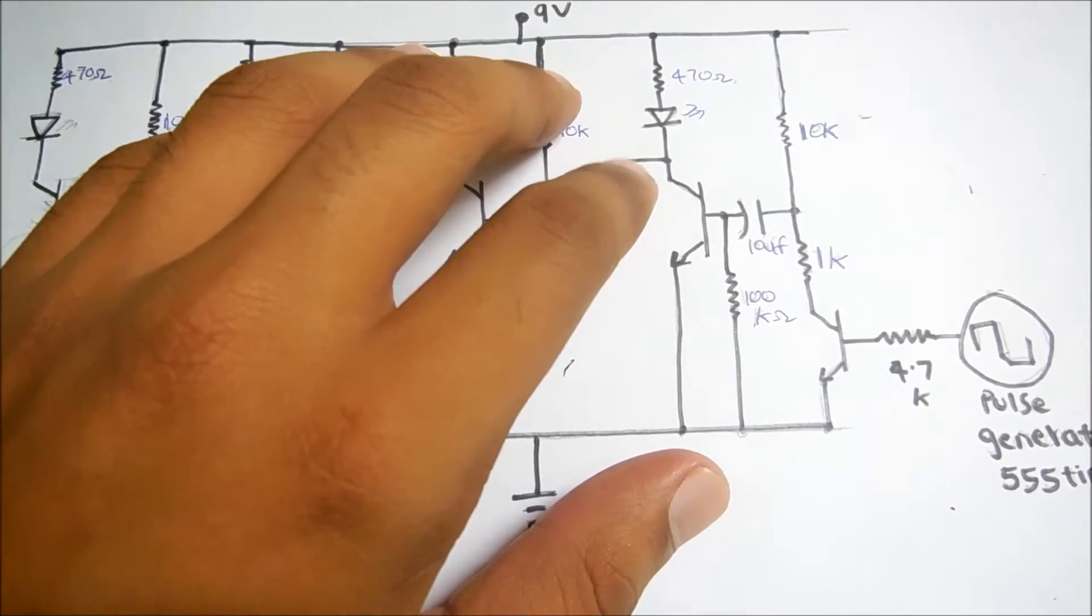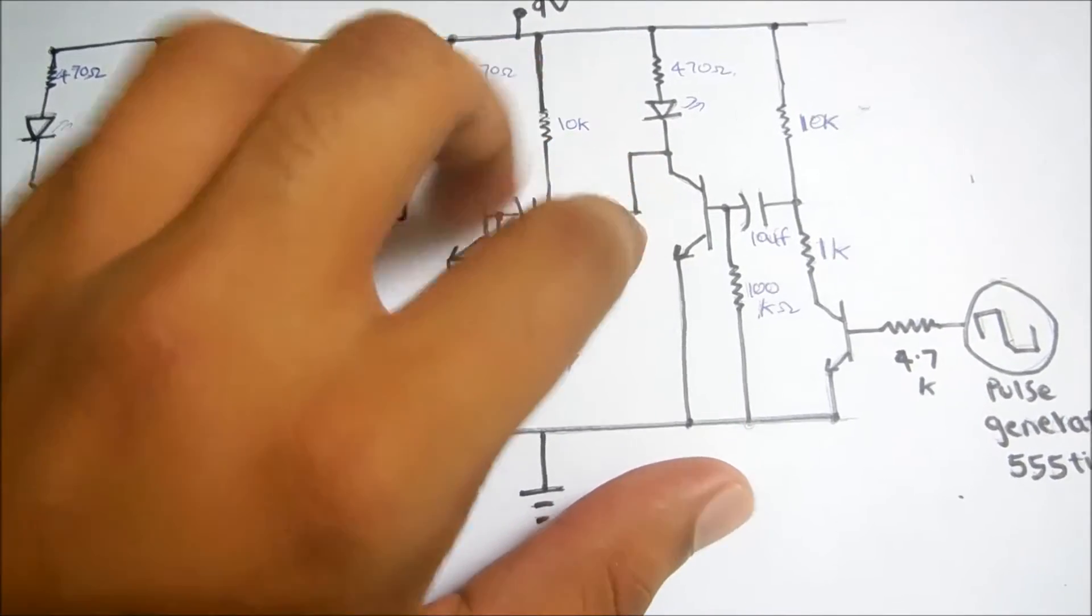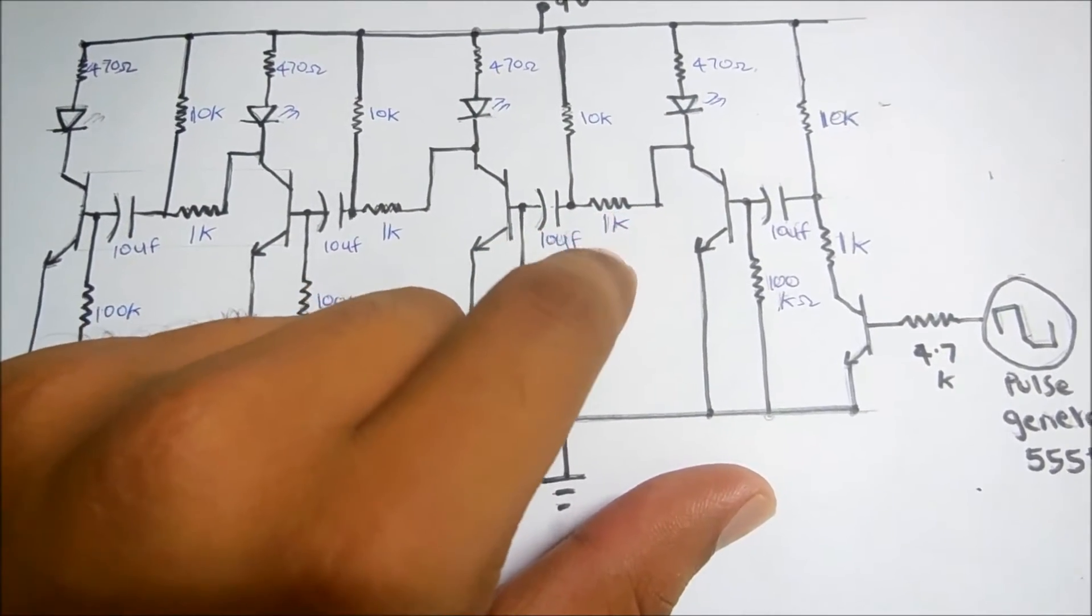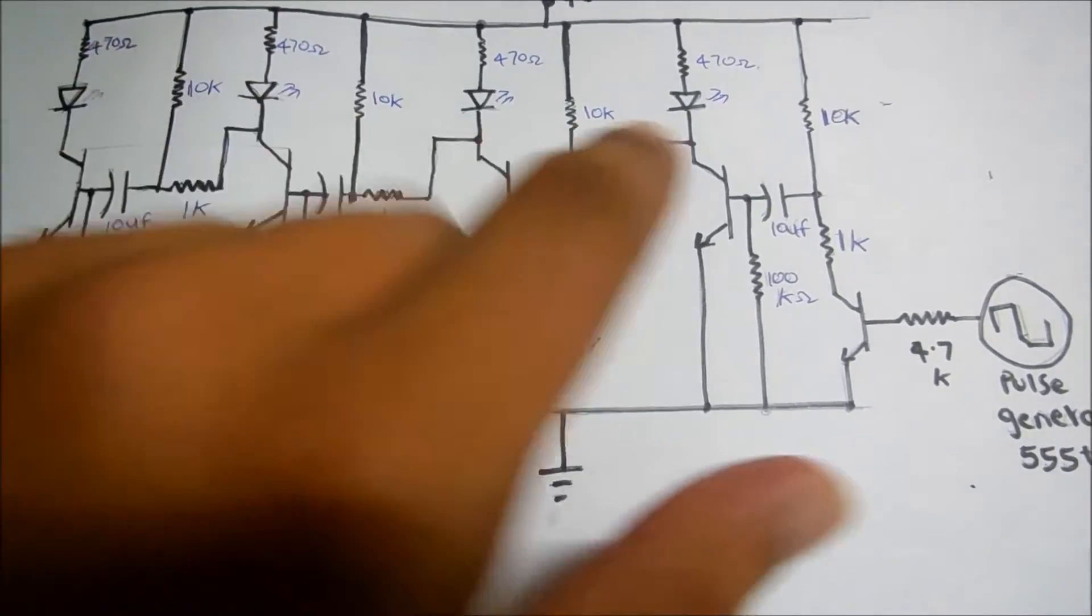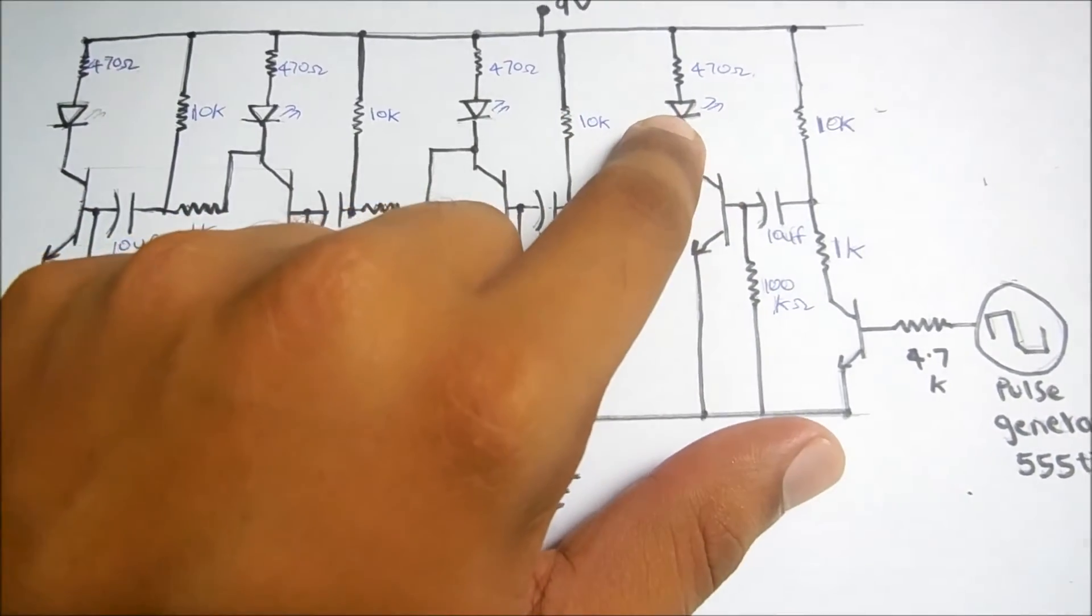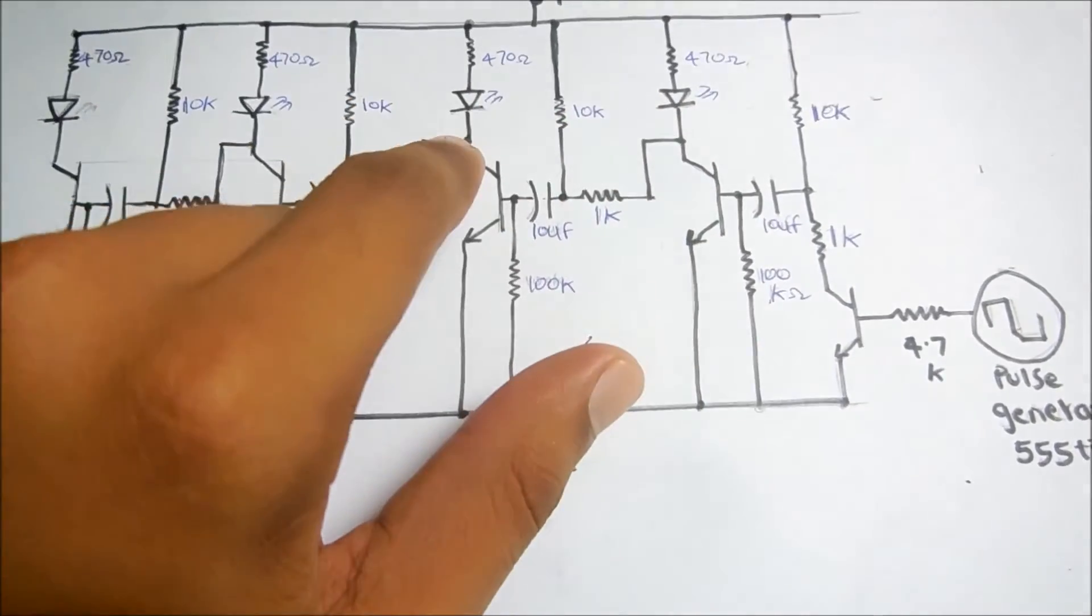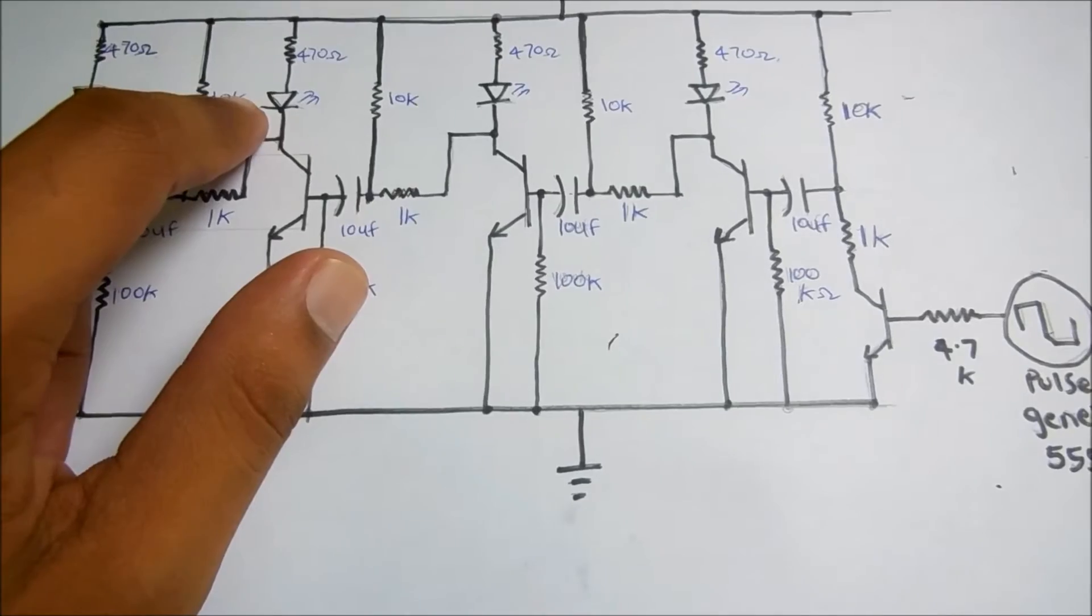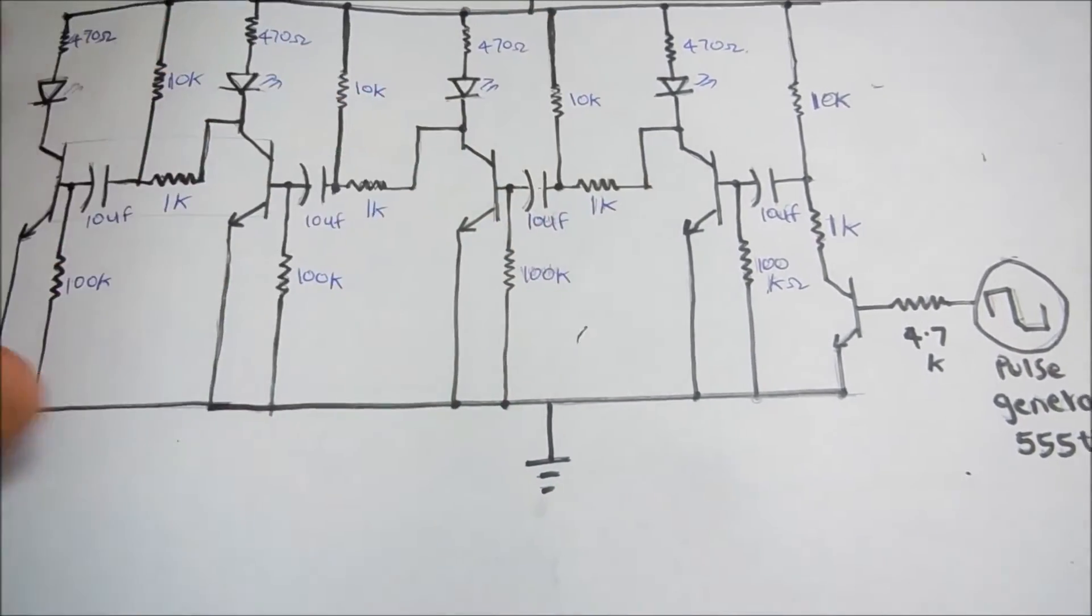This edge detector will trigger another edge detector interfaced by a 1K resistor. This is how the LED will turn off slowly, then turn on the next one, which will turn off slowly and turn on the next, and the cycle will repeat.